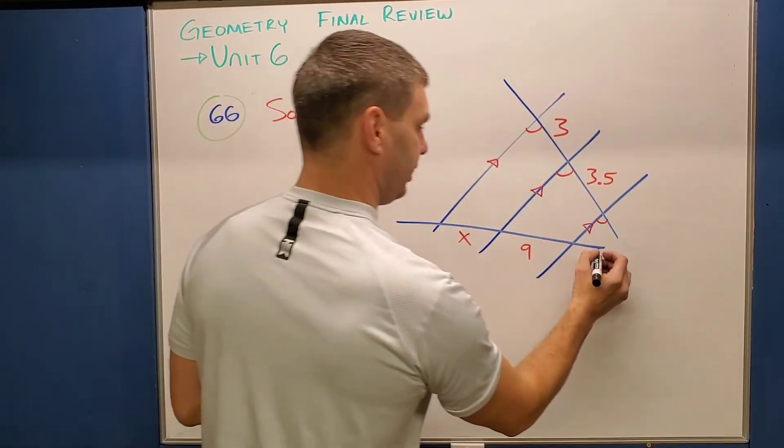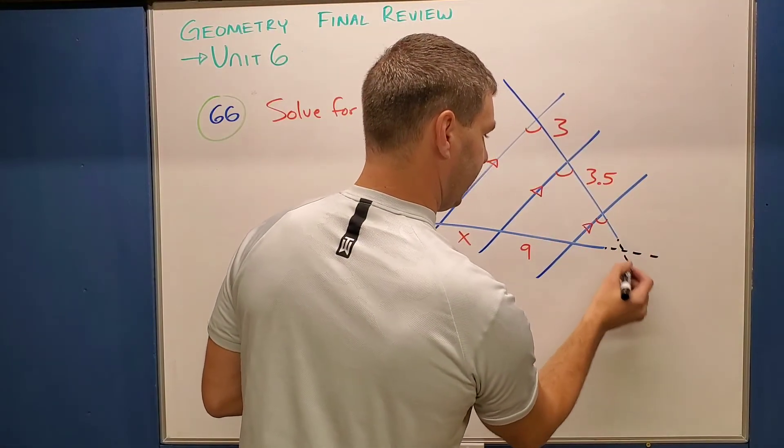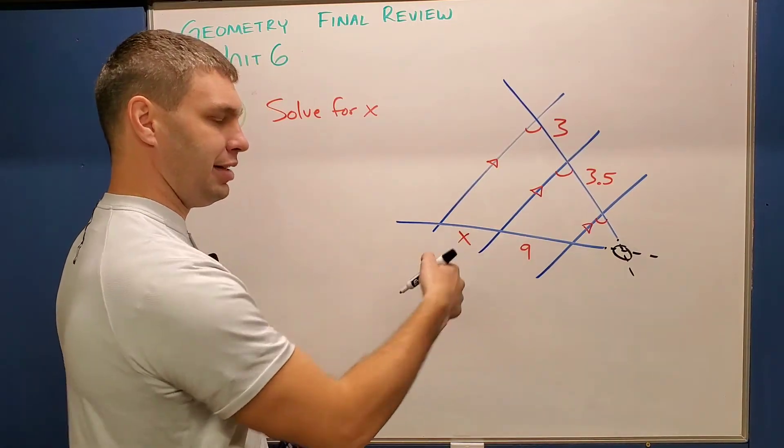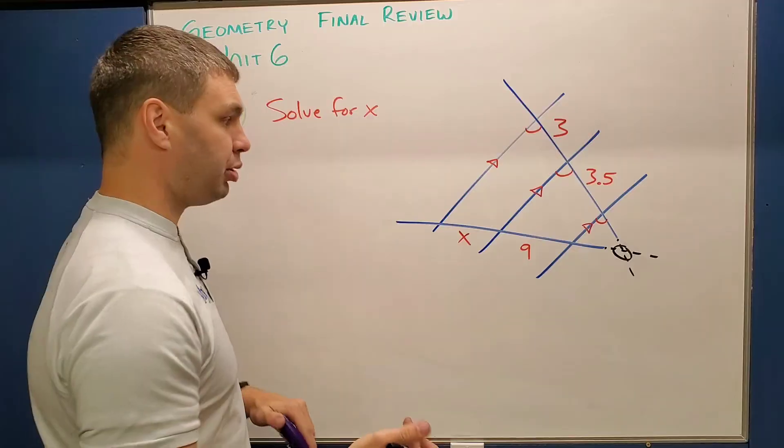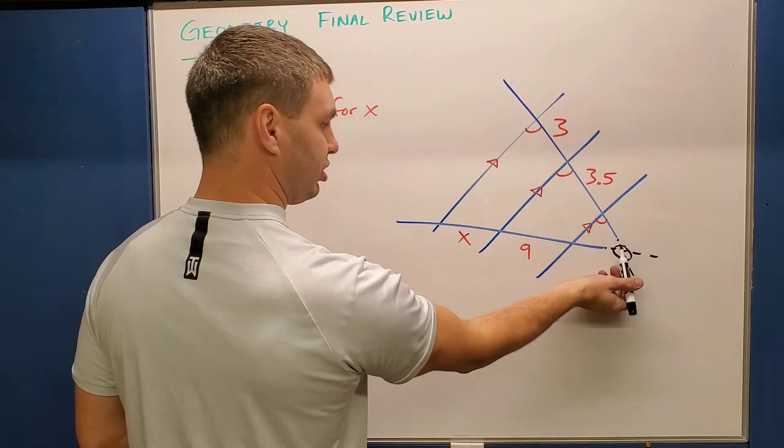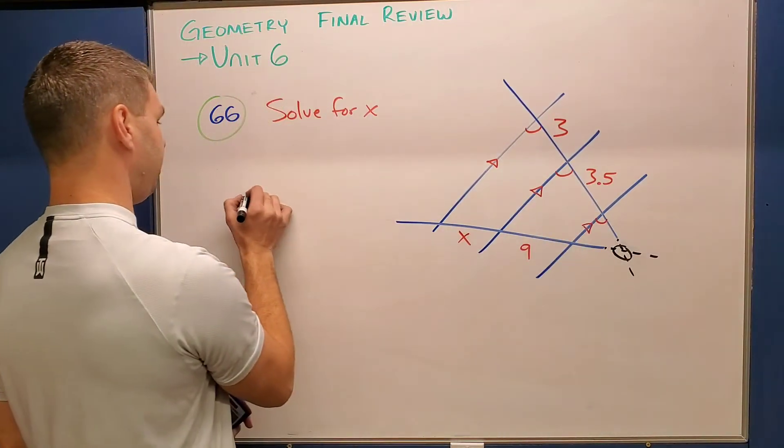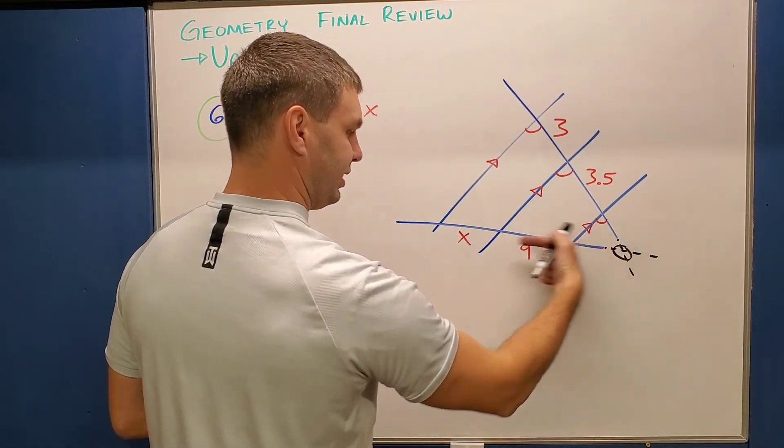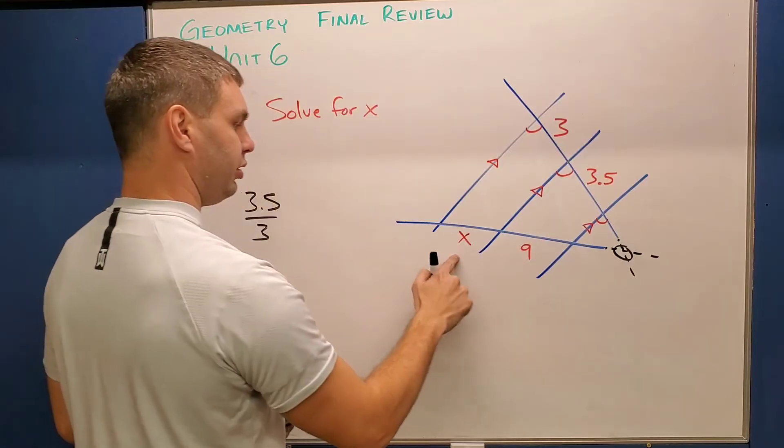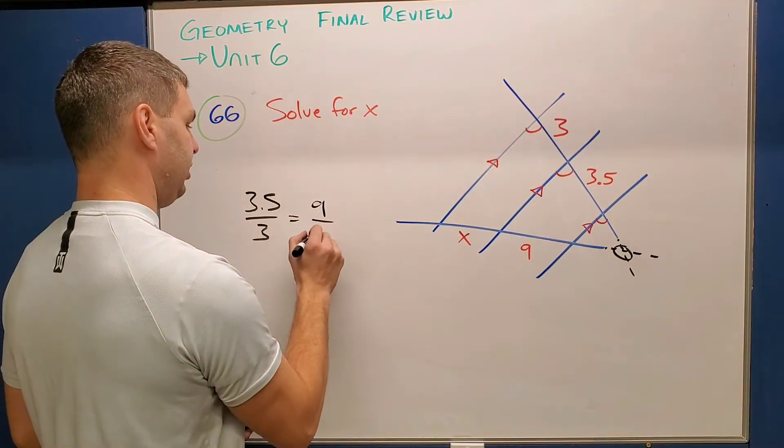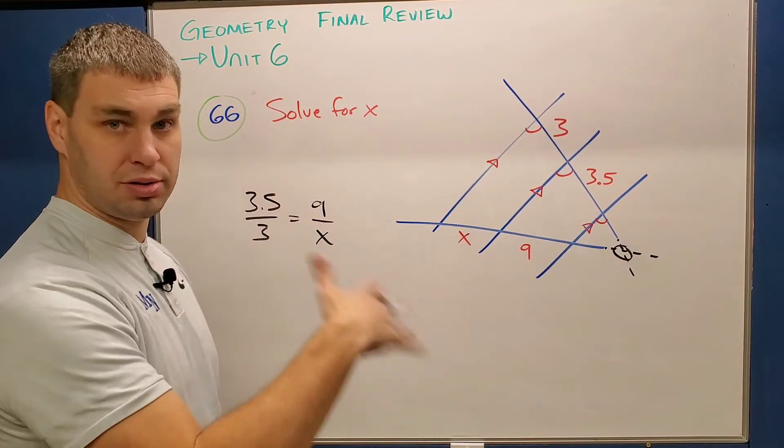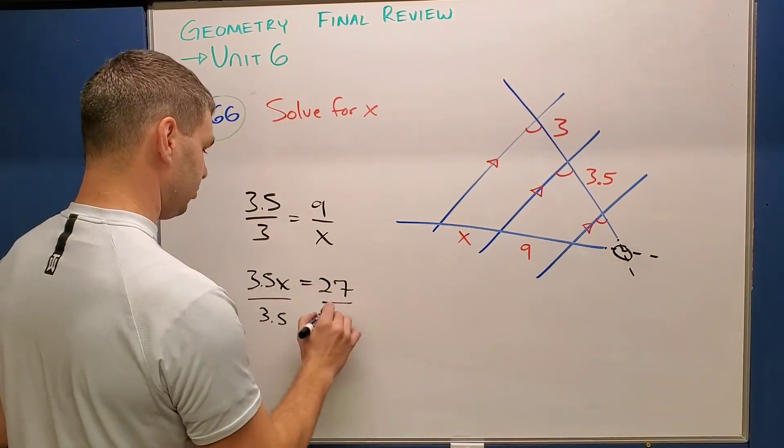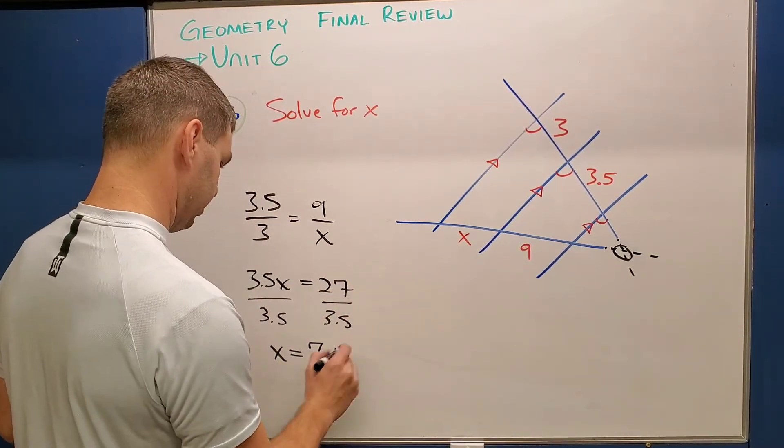So kind of like, remember the last one where we started at that point and we ran down one side and ran down the other? Well, if I were to continue these lines, just like that, it would make a point. And then what we can do is still run down one side, run down the other and make our proportion. So if I go again, kind of starting here along the top, that's going to be 3.5 over 3. And then same thing along the bottom, going in that same direction, we're going to have 9 over x. So equals 9 over x to make our proportion, cross multiply, and we'll solve it.